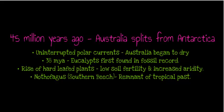Antarctica became very, very cold and wasn't getting any of those warm air currents coming from the north. This also led to Australia beginning to dry, and this process would occur over many, many years.